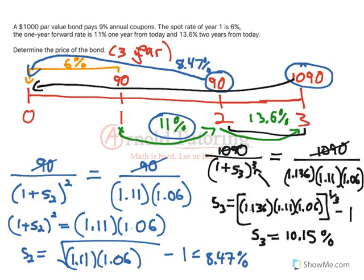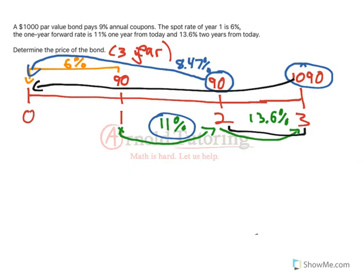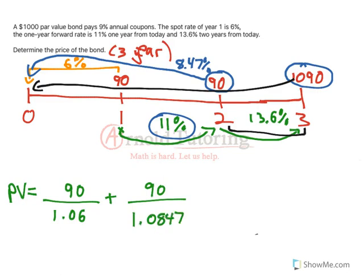So I've now got my 3 year spot rate, my 2 year spot rate, and the 1 year spot rate was given. So we can discount all 3 individual cash flows at their own rates. To get the price of the bond, that's just the present value of the future cash flows. So it's going to be the first 90 discounted at the 1 year spot rate for 1 year, plus the second 90 discounted at the 8.47%, that's 8.47% for 2 years. And then the final 1090 divided by 1.1015, because that was the 10.15% that we just found for 3 years. That was the 3 year spot rate.